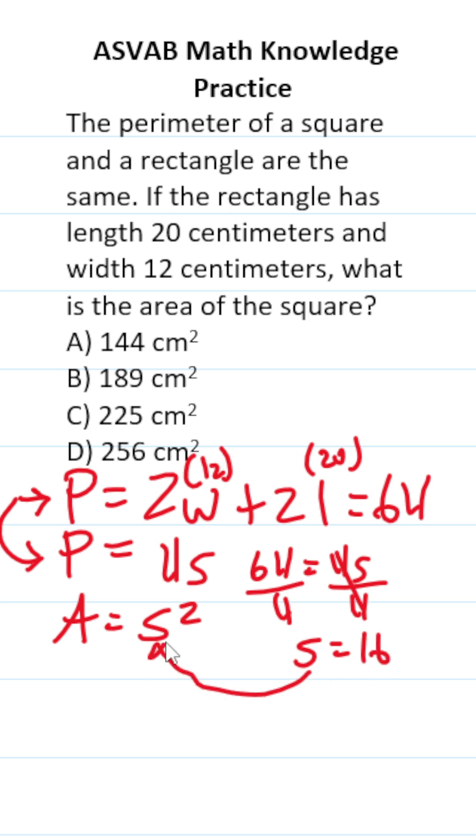Now that we know what s is, we can plug it in here. This becomes 16². That's the same thing as 16 times 16, which I'm going to let you work out on your own. I happen to know it's 256 cm² - answer D. I have that memorized, but you could work it out using this multiplication.